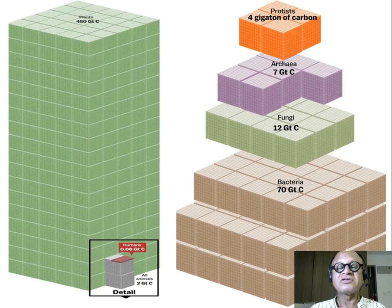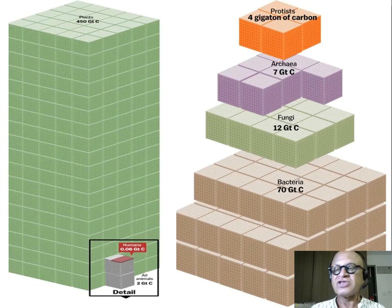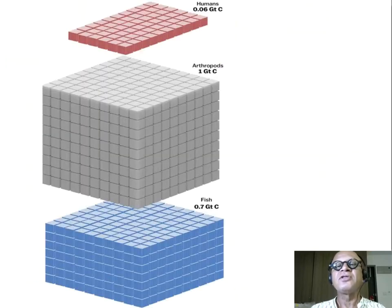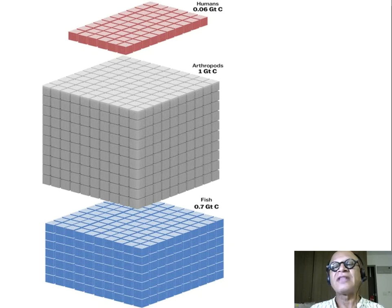You can see all the animals together is just about 2 gigatons. In the ocean, you can look here, protists are 4 gigatons of carbon, archaea 7 gigatons, fungi, bacteria, actually this is still all the species, not just the ocean. And look at this blown up again. Humans, 0.06. Anthropods, which are basically all the insects, spiders, and so on, that's 1 gigaton. And fish is 0.7 gigaton.